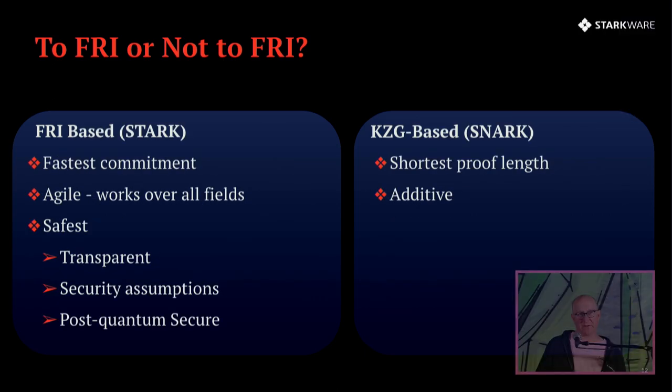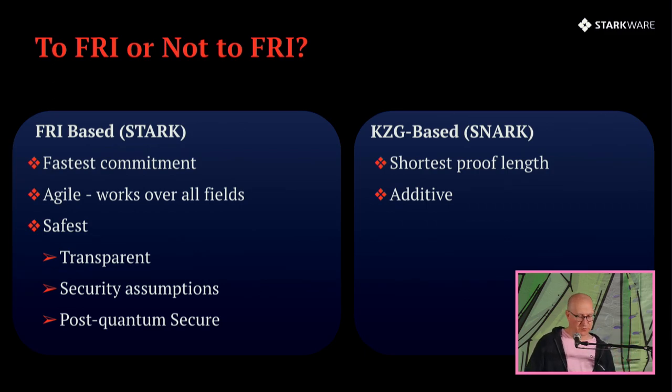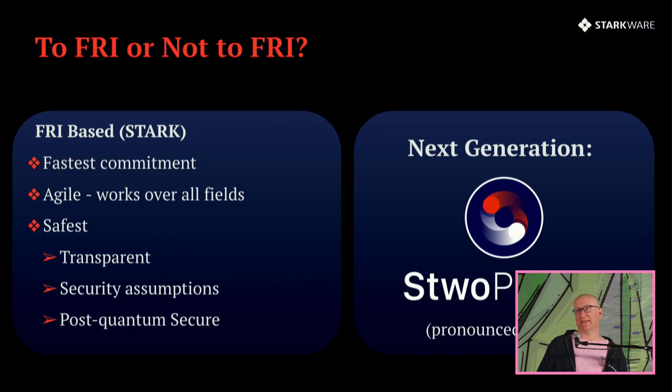FRI based systems or STARKs have a bunch of other advantages over SNARKs. They have fastest commitment time. They're agile in the sense that they work over all finite fields from binary all the way to large prime fields. They're safest because they have no trusted setup, meaning they're transparent proof systems. Their security assumptions really revolve only around the existence of some secure hash function. And in particular, they're also post-quantum secure. KZG does have advantages, SNARKs. They have very short proof length, under 200 bytes, and they have additive properties, which is a double-edged sword. You can use them for doing things like folding and compressing things, but this additivity is related to things like post-quantum insecurity.